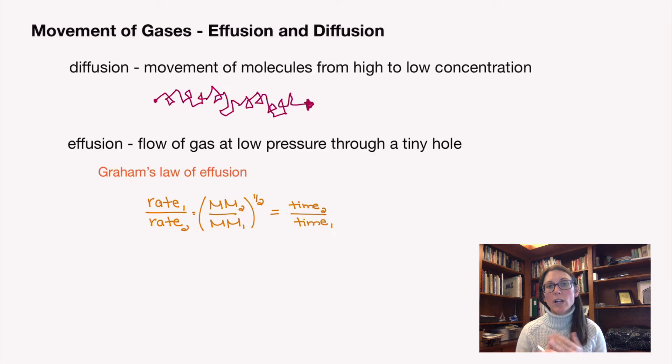And so the more collisions you're going to have with that particular hole, the more chances you have to strike that particular hole, the more likely it is that your particle is going to escape. And so as a result, the faster the particle is moving, the faster it is going to effuse because it's going to be able to have more chances to escape through that goal.